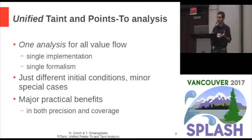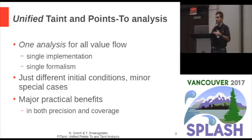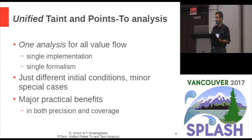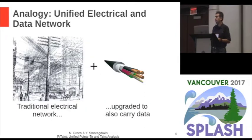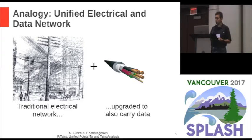They're all about value flow, after all. And indeed, that's what we are going to propose: one analysis for all value flow. Single implementation, also single formalism. It integrates ideas others have worked on, but not quite in the same way. The entire analysis will be the same implementation — it will just have different initial conditions for heap objects and for taint values, with some minor special case handling. This will yield major practical benefits in both precision and coverage. Schematically, this is like having an electrical grid and upgrading the wires to also carry data.